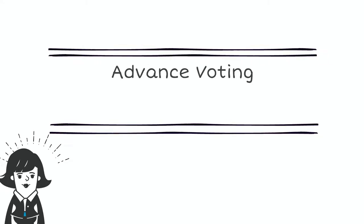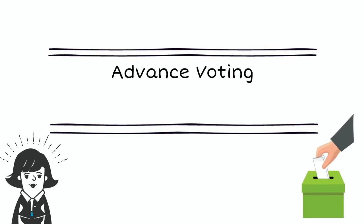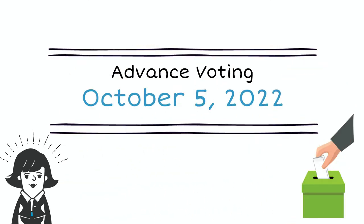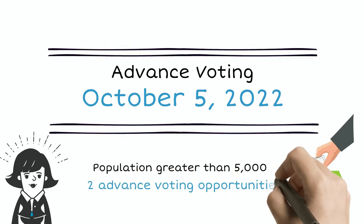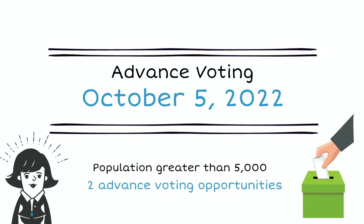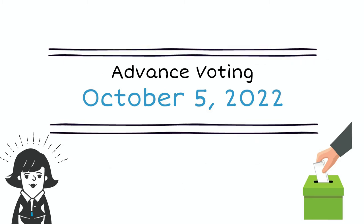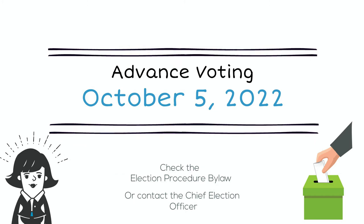All local governments will hold advanced voting on Wednesday, October 5th, 2022. Local governments with populations greater than 5,000 are required to hold at least two advanced voting opportunities. Check your local government's election procedure bylaw for details on advanced voting opportunities, and your local government will also publish details about advanced voting.